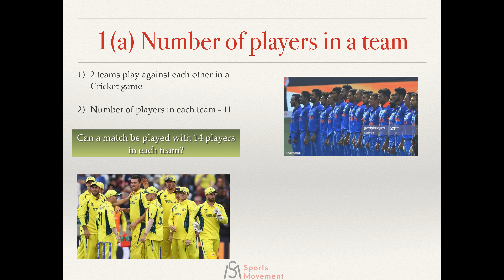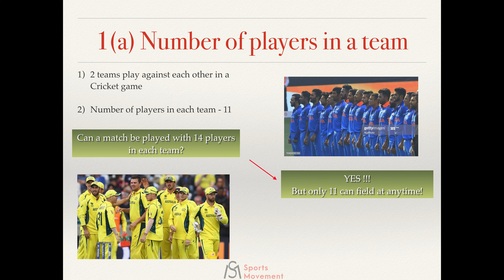Now, the question on the screen is: can a match be played with 14 players in each team? It turns out that yes, such a provision exists in the laws of the game. In certain practice games before a big competition, 14 or 13 players can be part of each team, to give more players an opportunity before a tournament. But remember, only 11 players can field at any point — that's nine fielders plus a wicket keeper and a bowler. All 14 can bat, but only 11 can field.